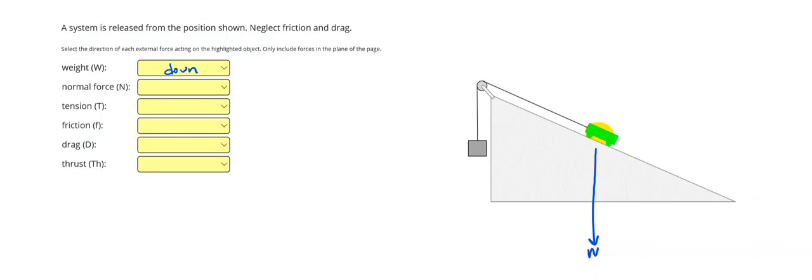Our normal force, now remember, we need to draw something that is perpendicular to the surface. So our normal force is going to be diagonally up and to the right. We get rid of those reference lines.